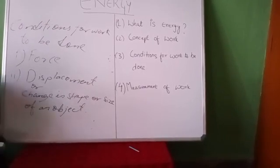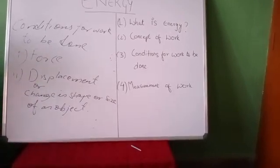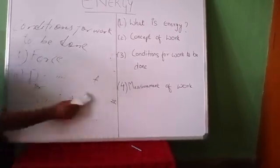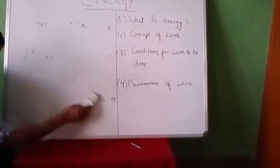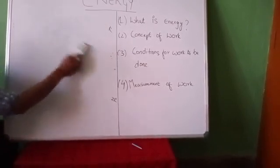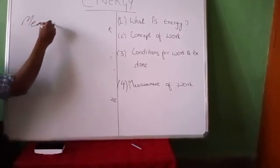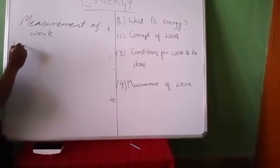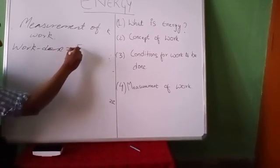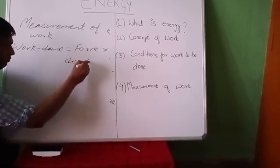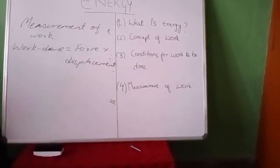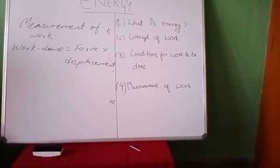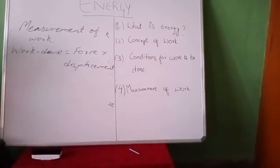This was all about the concept of work and conditions for work to be done. Now we will discuss the last topic: measurement of work. How can we measure work? Work done is given by force multiplied by displacement — it is the product of force and displacement. Once we are done with the chapter, at the end we will do numericals based on this formula.